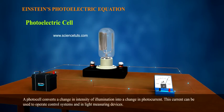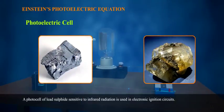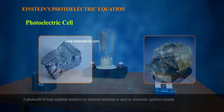A photocell converts a change in intensity of illumination into a change in photocurrent. This current can be used to operate controlled systems and in light measuring devices. A photocell of lead sulfide sensitive to infrared radiation is used in electronic ignition circuits.